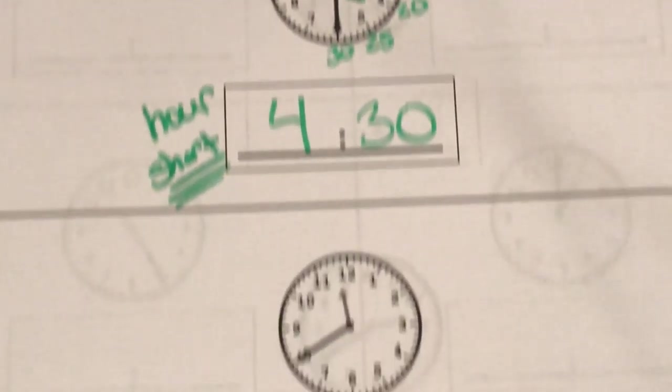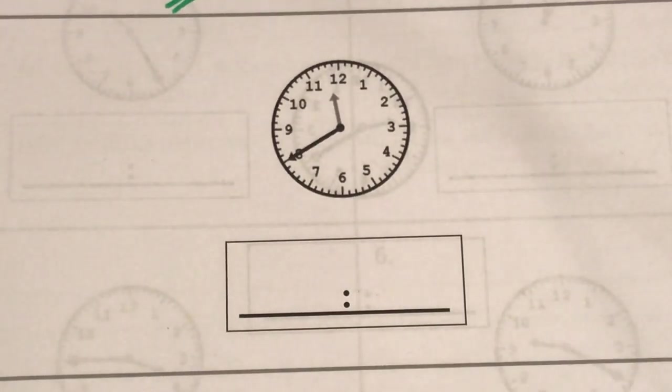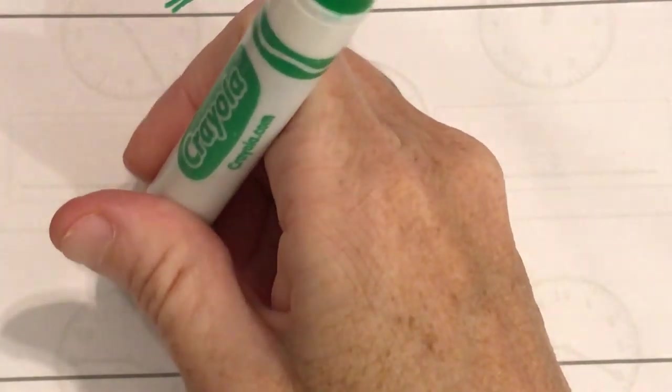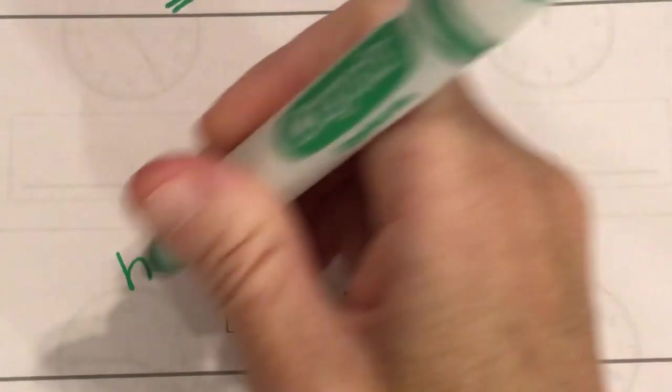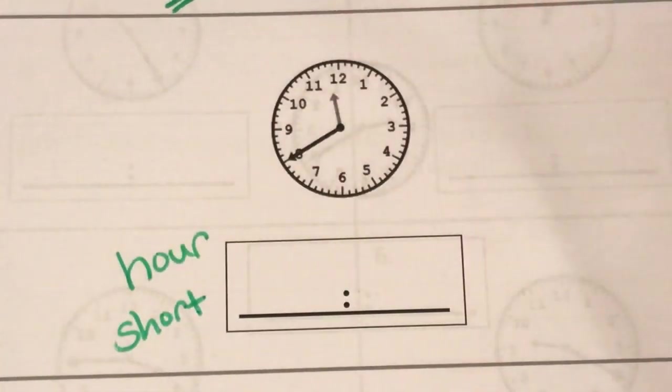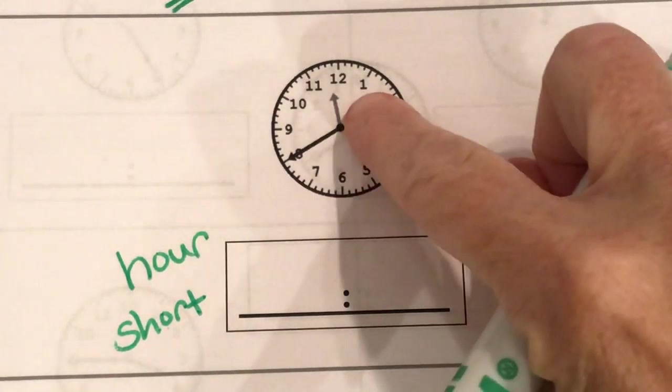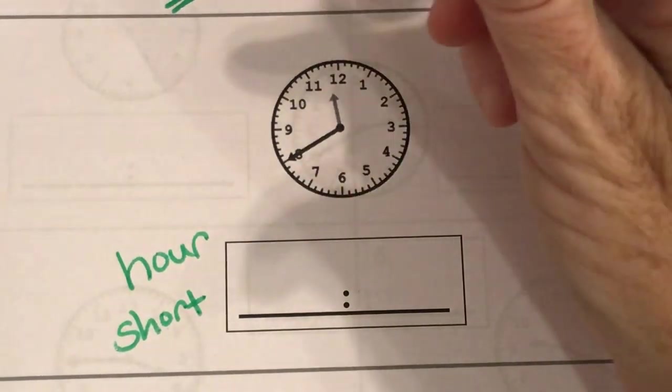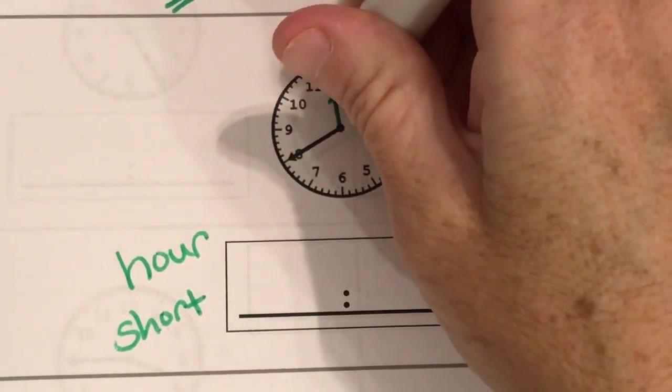Okay ladies and gentlemen let's try another one. Okay so which hand are we going to look to first? We always look to our hour hand which is our short hand first. So if I look at my two hands it's really clear that this is my hour hand.